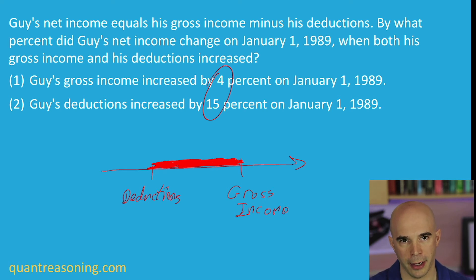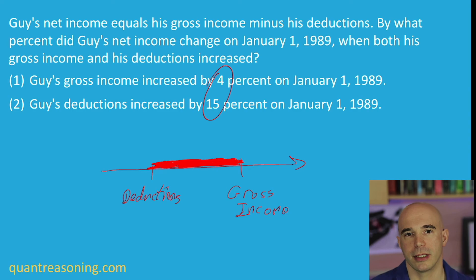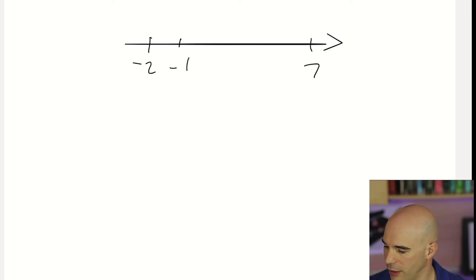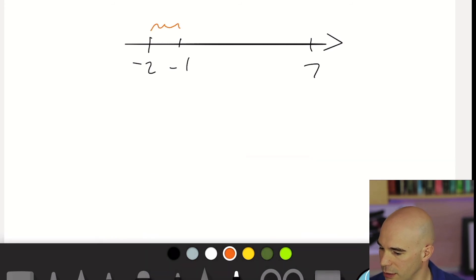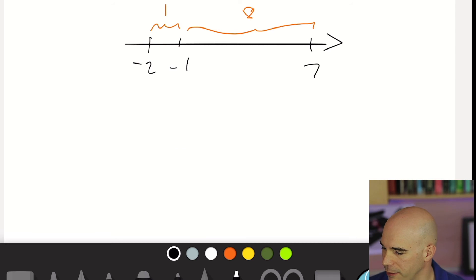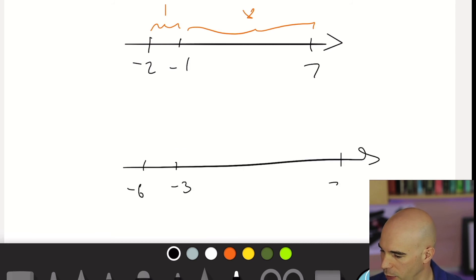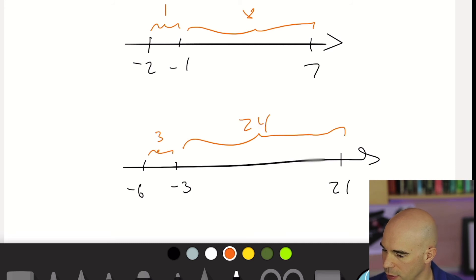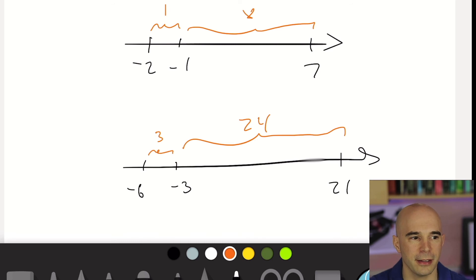Let's draw a number line and put on it negative two, negative one, and positive seven. The gaps are one and eight. Now, triple every number on this number line — we get negative six, negative three, and twenty-one. What happens to the gaps? The gap of one becomes three, and the gap of eight becomes twenty-four. All gaps tripled. If you multiply a set of numbers by the same change factor, the gaps among those tick marks will also change by that same change factor.